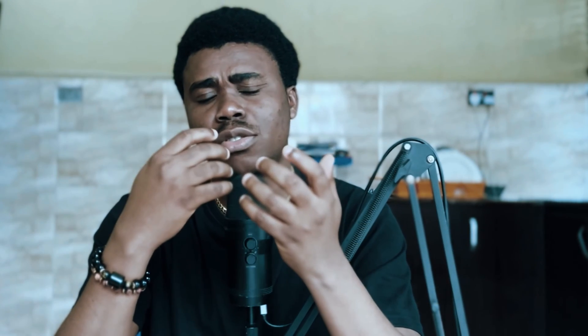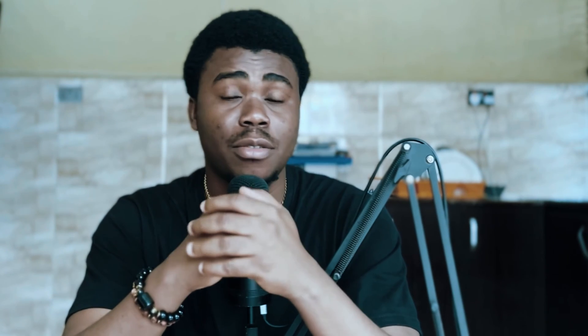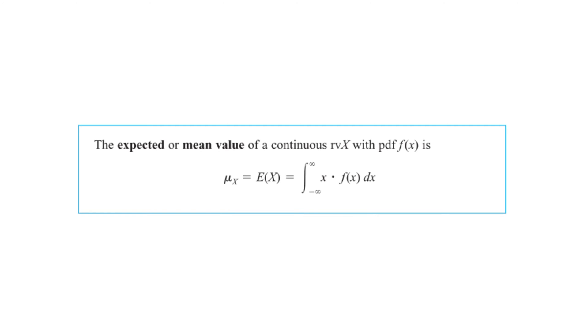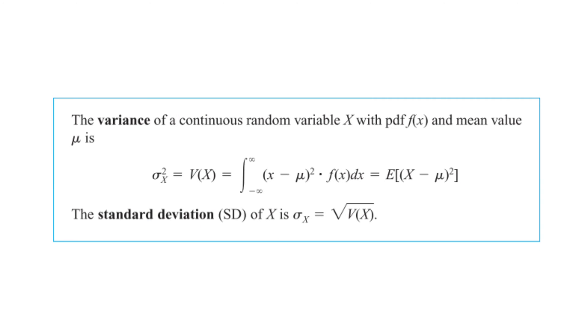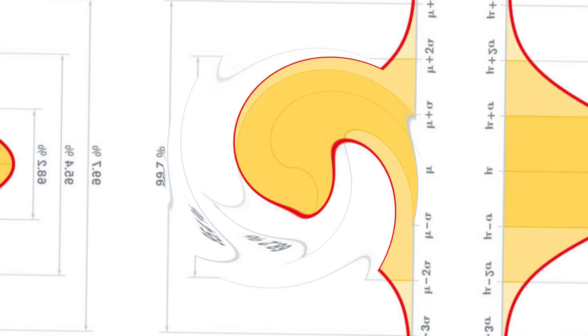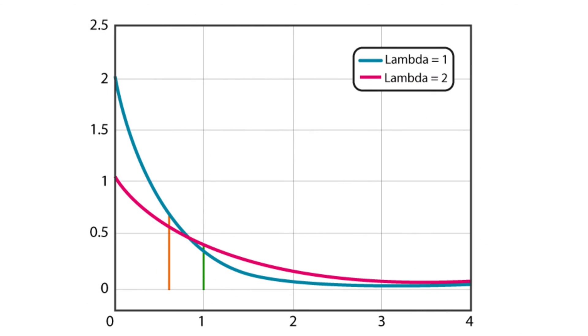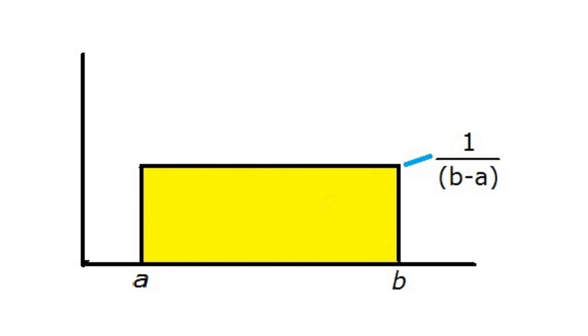Just like the discrete probability distribution, there is a mathematical function used to define the probability distribution of a continuous distribution — we call it the probability density function (PDF). The continuous distribution is more complex because it incorporates calculus; to get the expected value and variance of a continuous distribution, we inculcate the concept of calculus. Examples of continuous distributions include the normal, exponential, gamma, and uniform (rectangular) distributions.